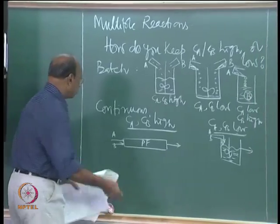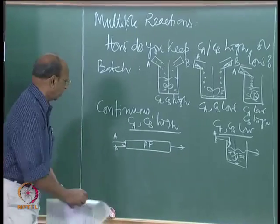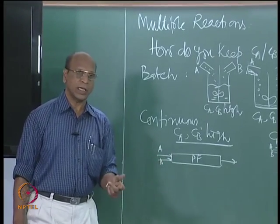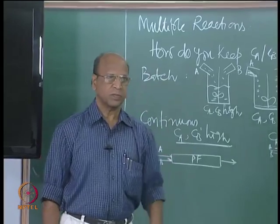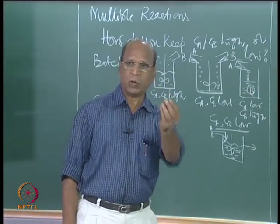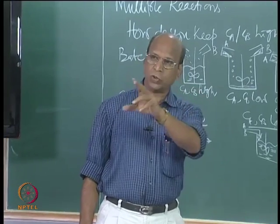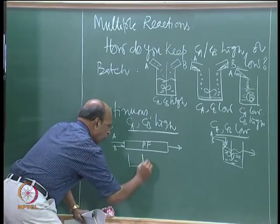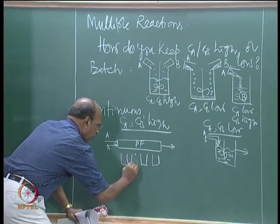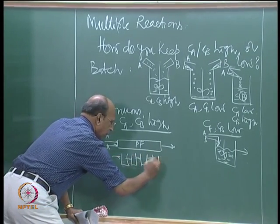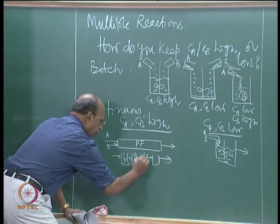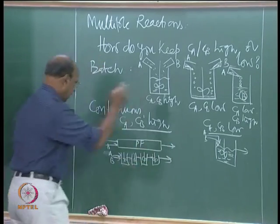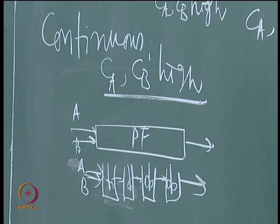We also have another possibility - this is not new. How do I replace the PFR with tanks? I may put more number of tanks. We have seen that six tanks are enough to get almost plug flow - only maybe 1 to 3 percent is left from sixth to infinite number of tanks. So to maintain high concentrations, you can also put tanks in series with A and B entering, and the product coming out. This is another way of maintaining high concentrations.